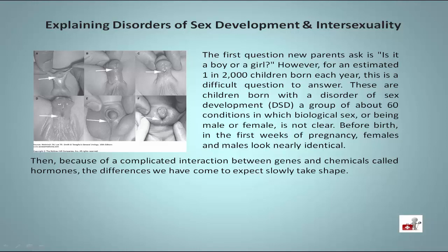Before birth, in the first weeks of pregnancy, females and males look nearly identical. Then, because of a complicated interaction between genes and chemicals called hormones, the differences we have come to expect slowly take shape.